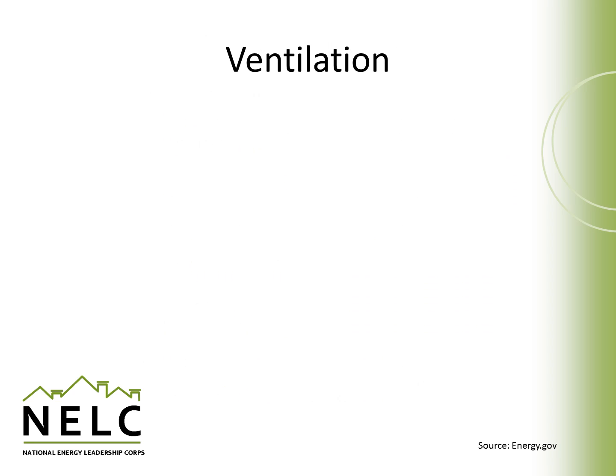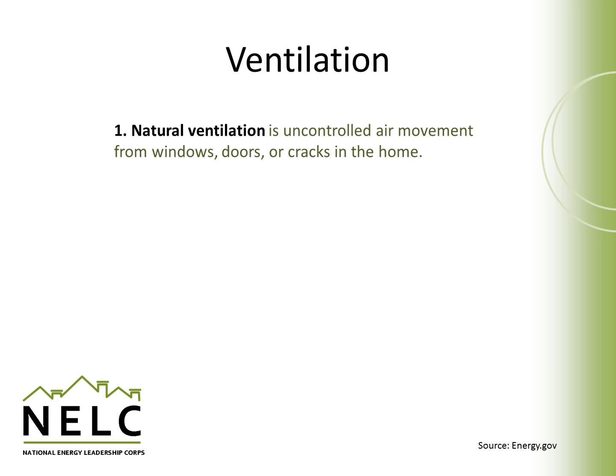There are a couple different forms of ventilation that can be used to make sure there's enough fresh air in a house. One of them is natural ventilation, which is sort of uncontrolled natural air movement through doors and windows. It's used most commonly and it allows fresh outdoor air to replace indoor air in a home. It's usually found in older homes, although some newer modern homes are reintroducing passive and natural ventilation as a way to reduce energy costs.